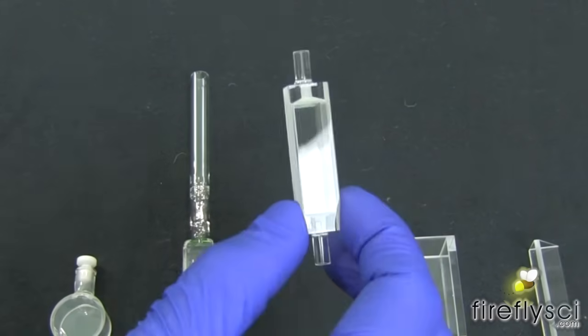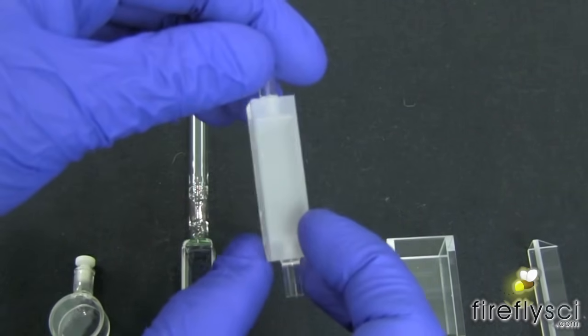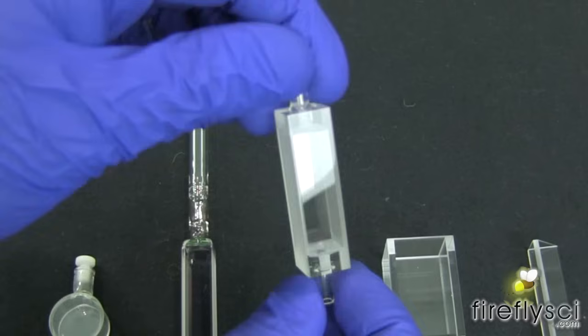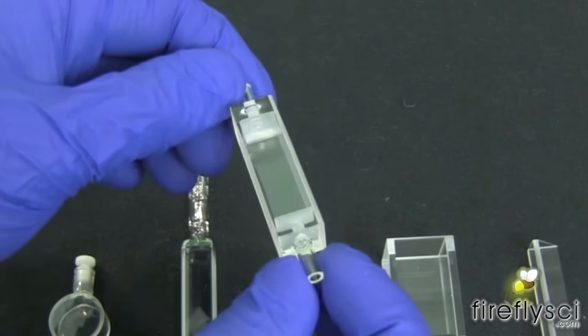This here is our 501 basic flow through cuvette. It's a 10 millimeter cell with an inlet and outlet tube on the top and bottom.